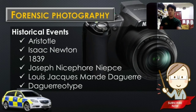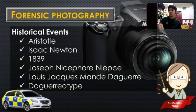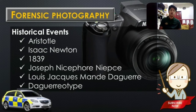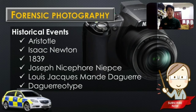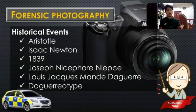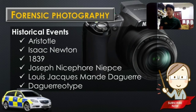Then we have Joseph Nicéphore Niépce. He produced the so-called heliographic drawing — basically a contact printing where an image is engraved into a solid object, chemicals are applied, then it is pressed onto another object to produce an image. You know the concept of a stamp — where signatures or writings are engraved into a solid object, you put it on ink, then press it onto a flat surface like paper. What is engraved will also become visible on the other object. That's the concept of heliographic drawing.